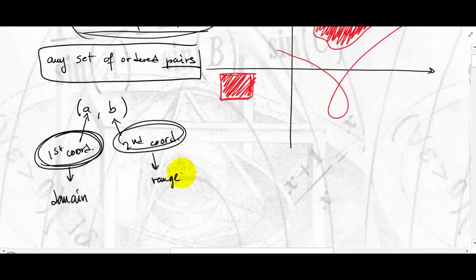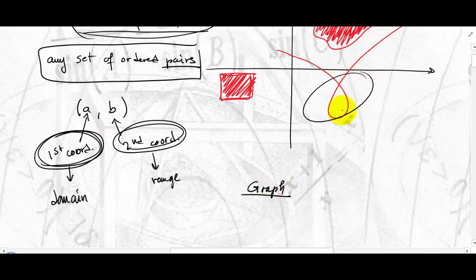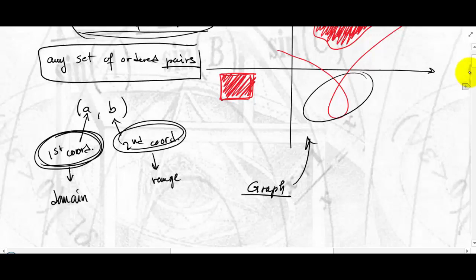Domain and range. Let me also mention the last word associated with relation: the word graph. So what's a graph? It's all the ordered pairs — when you plot them, you have the graph of the relation. So graph and relation are really the same thing. A graph is just when you plot them.